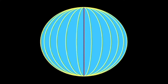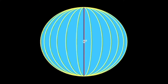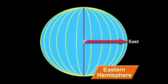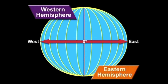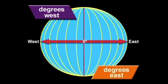Lines of longitude are named in degrees too. There's also a special line of longitude known as the prime meridian, located at zero degrees longitude. It runs through Greenwich, England. The prime meridian divides the Earth into hemispheres as well. The half of the Earth to the east of the prime meridian is called the eastern hemisphere, and everything to the west is called the western hemisphere. The lines east of the prime meridian are called degrees east, and the lines west are called degrees west.